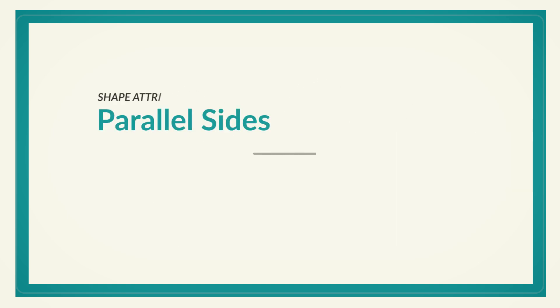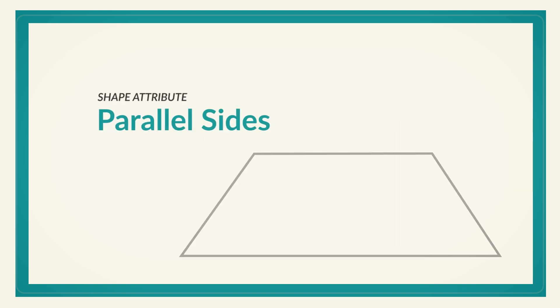Shape Dance is a game you can even keep playing with older kids by giving more challenging hints, like: find a shape that has two sides that are parallel like train tracks. And they would need to find a square, rectangle, trapezoid, or other shape with two parallel sides.